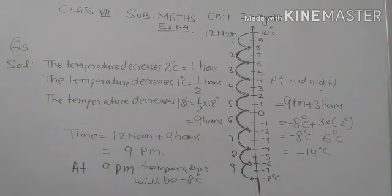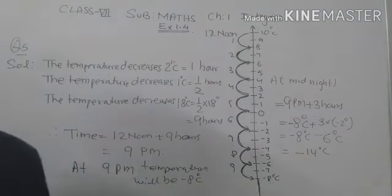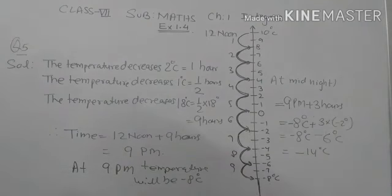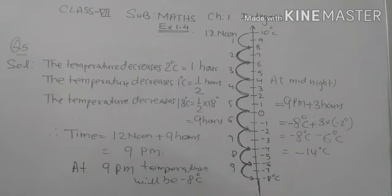So at midnight, temperature will be minus 14 degrees centigrade. That is the solution of question number 5. In the next video, question number 6. Peace.